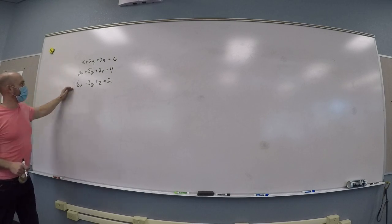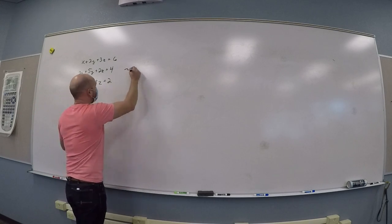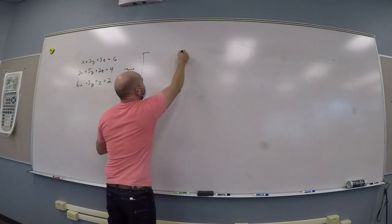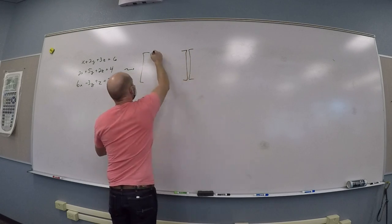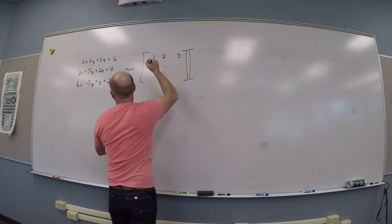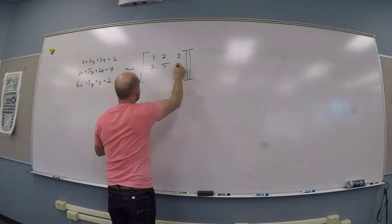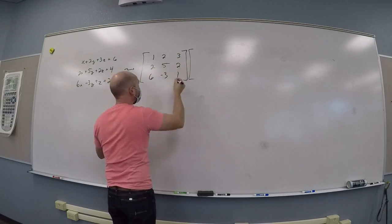So, here I'm going to take my equations and matrix-fy them, right? So this thing results in, what did you guys get for your matrix? 1, 2, 3. 1, 2, 3. 2, 5, 2. 2, 5, 2. 6, negative 3, 1. 6, negative 3, 1.